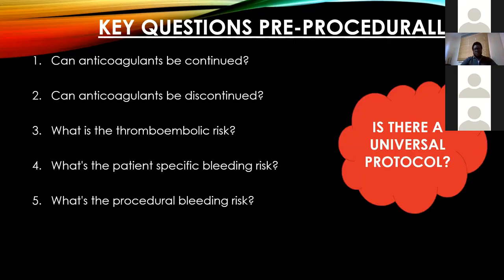The key pre-procedural questions to ask yourself when anesthetizing a patient on anticoagulants are: Can the anticoagulants be continued? Can they be discontinued? What is the thromboembolic risk of this patient? What is the patient-specific bleeding risk? And what is the procedural bleeding risk? There is no universal protocol — most protocols are region-based or hospital-based — but the general principle is the same.